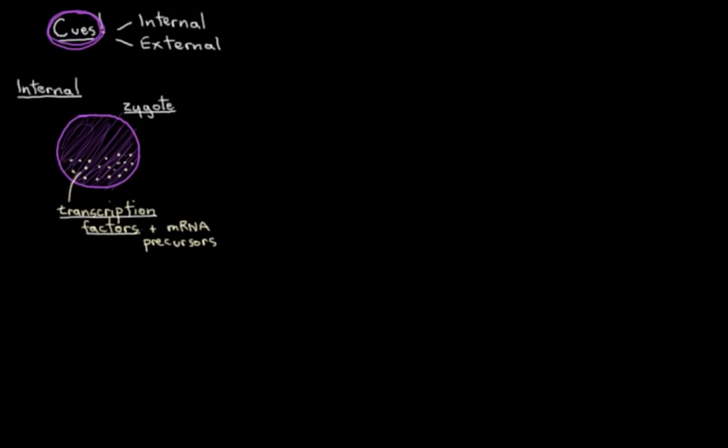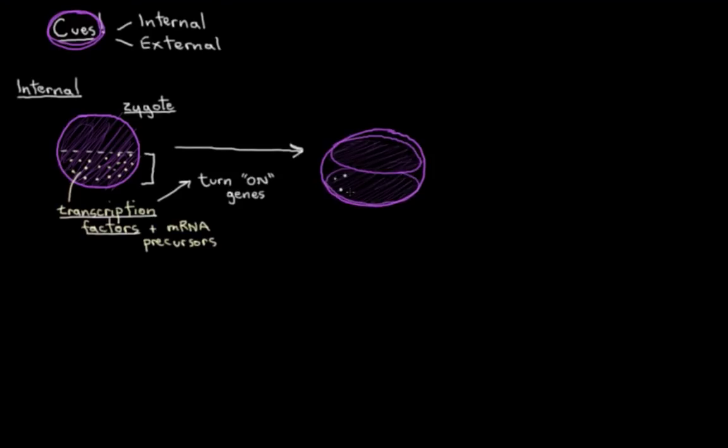So two things to note. First, transcription factors will activate certain genes and turn them on, that's what transcription factors do. And second, notice that all these little transcription factors are clustered around in one area. And this is important because when this zygote starts to divide, where do all these transcription factors end up?